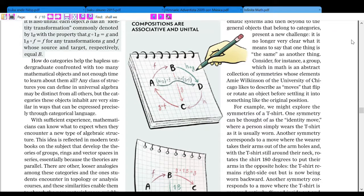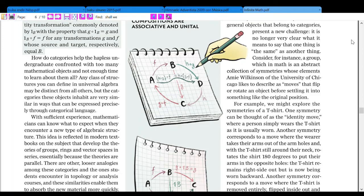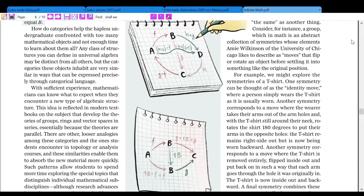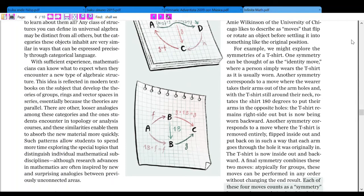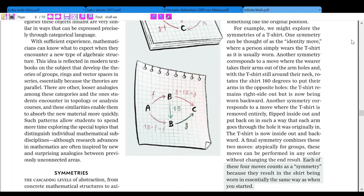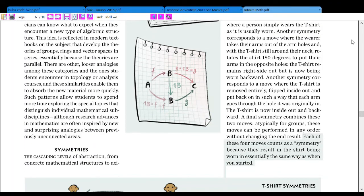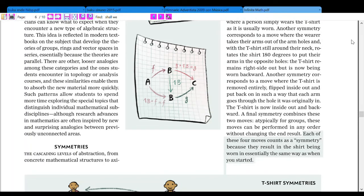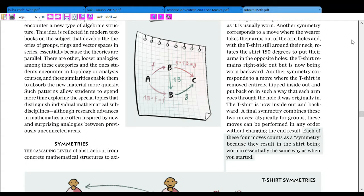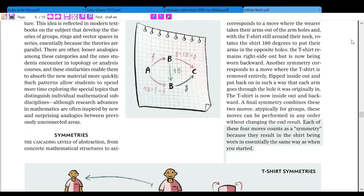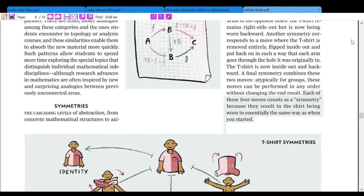Any class of structures you can define in universal algebra may be distinct from all other objects, but the categories these objects inhabit are very similar in ways that can be expressed precisely through categorical language. With sufficient experience, mathematicians can know what to expect when they encounter a new type of algebra structure. This idea is reflected in modern textbooks on the subject that develop the theories of groups, rings, and vector spaces in parallel, essentially because the theories are parallel. There are other, looser analogies among these categories and the ones students encounter in topology or analysis courses, and these similarities enable them to absorb the new material more quickly. Such patterns allow students to spend more time exploring the special topics that distinguish individual mathematical subdisciplines. Although researchers advanced in mathematics are often inspired by new and surprising analogies between previously unconnected areas.